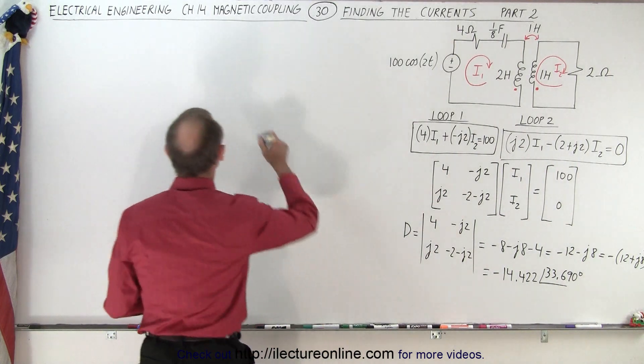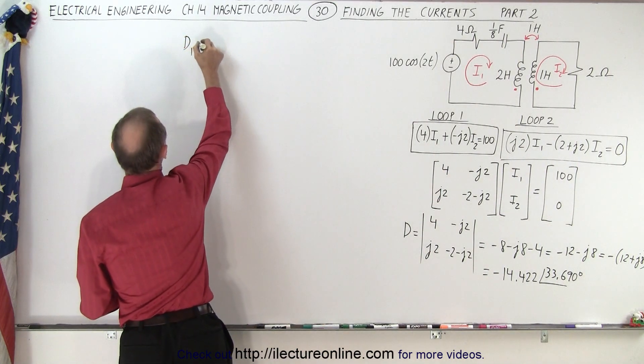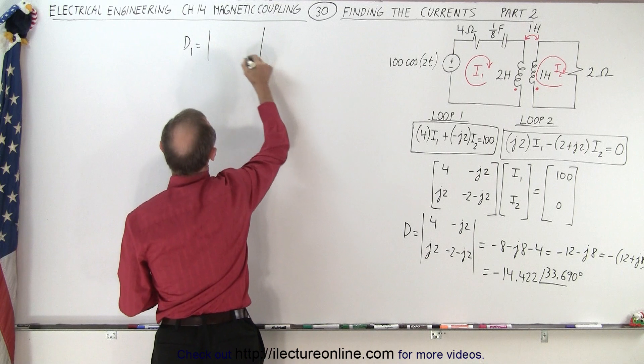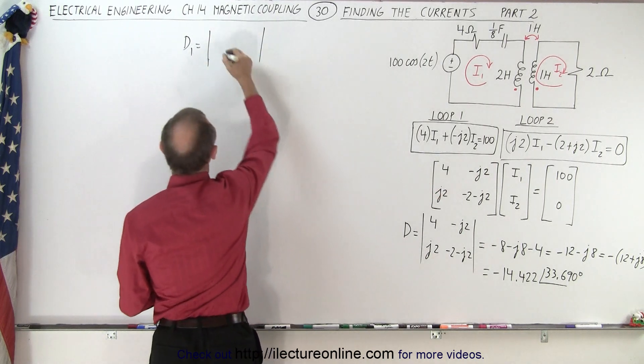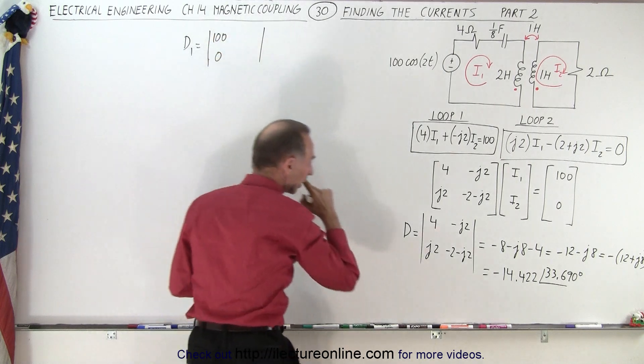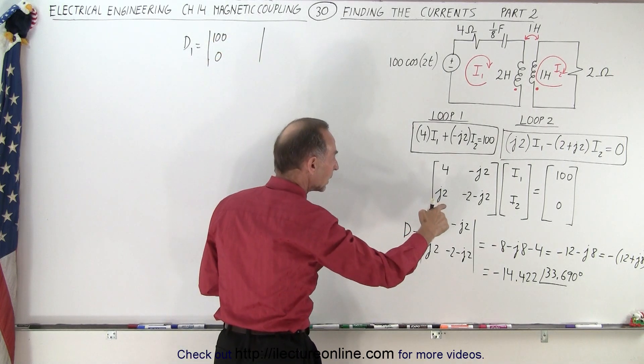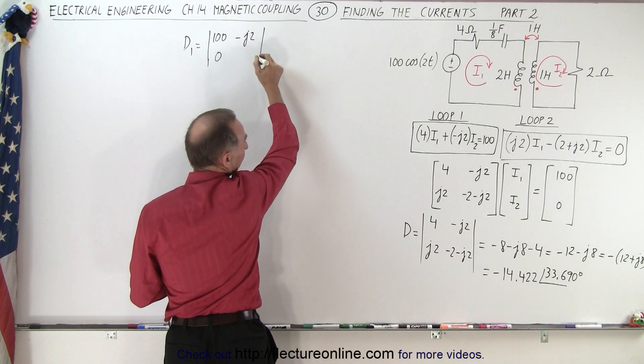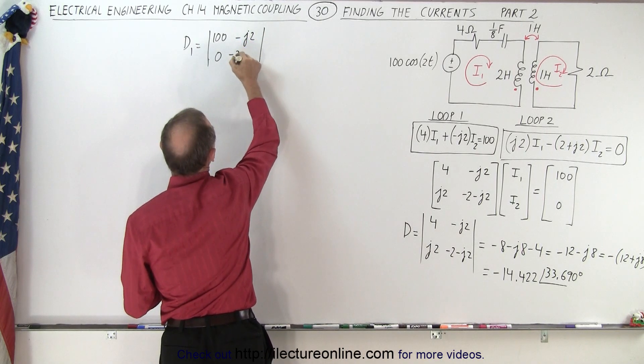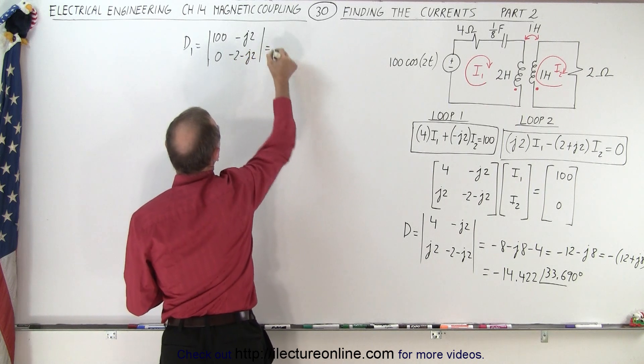So now we need to find D1, which is equal to... Now we're going to replace the first column by 100 and 0, and the second column will remain as minus J2 and minus 2 minus J2.